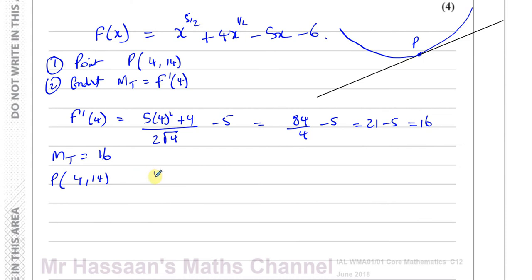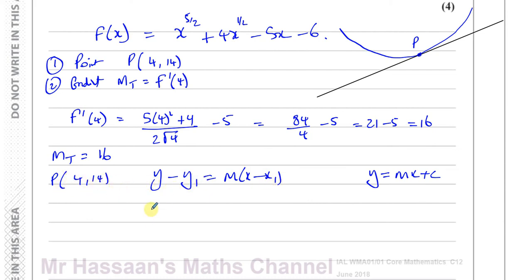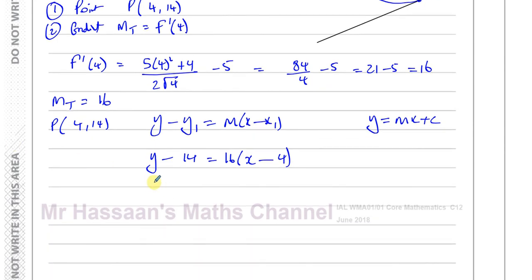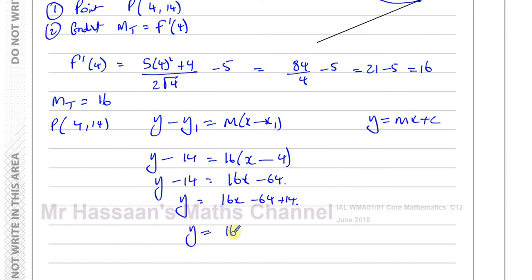Now we find the equation of the line using y minus y1 equals m times (x minus x1). Substituting point P (4, 14) and gradient 16: y minus 14 equals 16 times (x minus 4). Expanding: y minus 14 equals 16x minus 64. Adding 14 to both sides: y equals 16x minus 64 plus 14, so y equals 16x minus 50. That's the equation of the tangent.